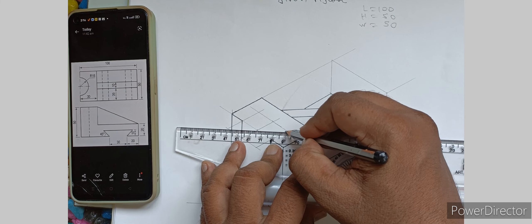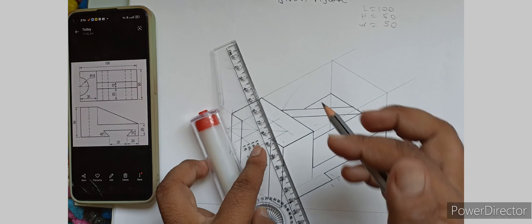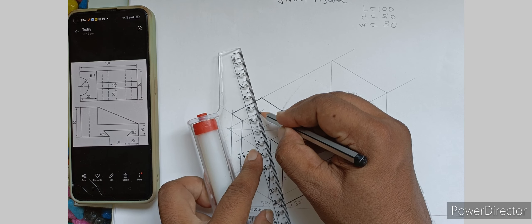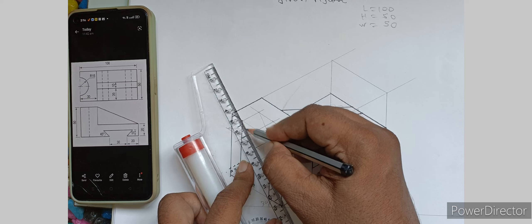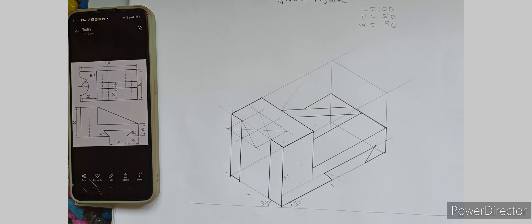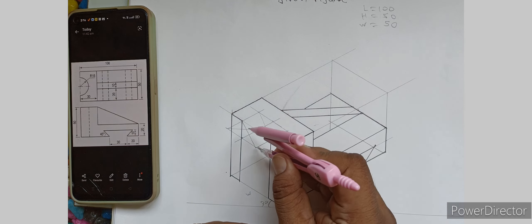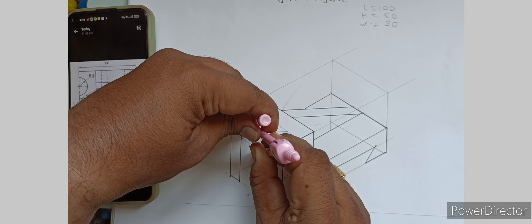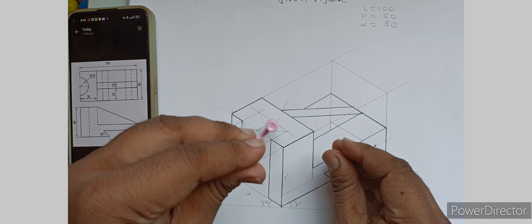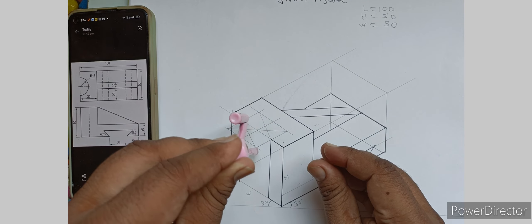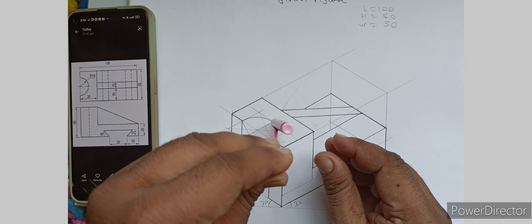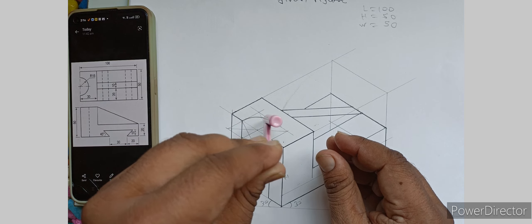This longest diagonal you have to join, and from this point to this point you have to join. You have to make an arc from this point to this point. From this point to this point also you have to make an arc.